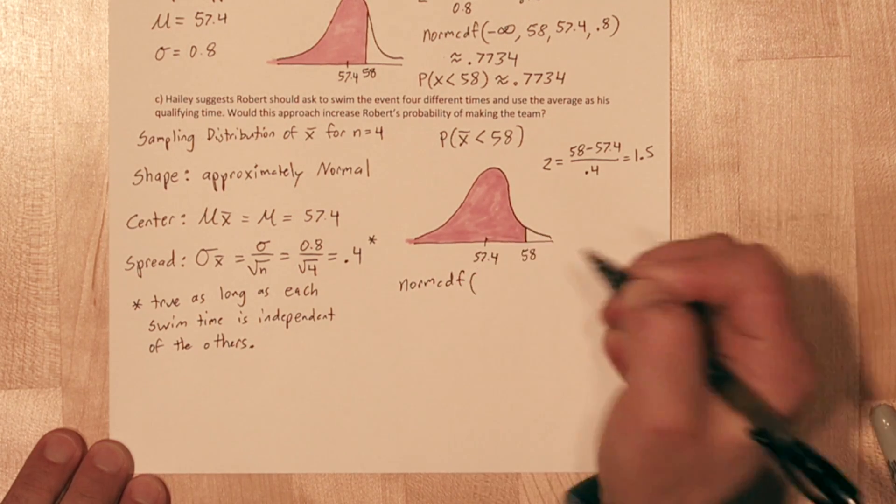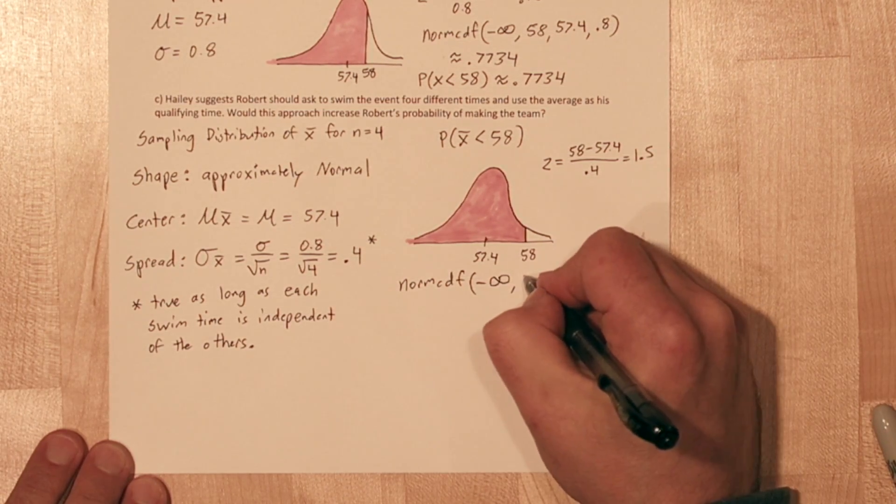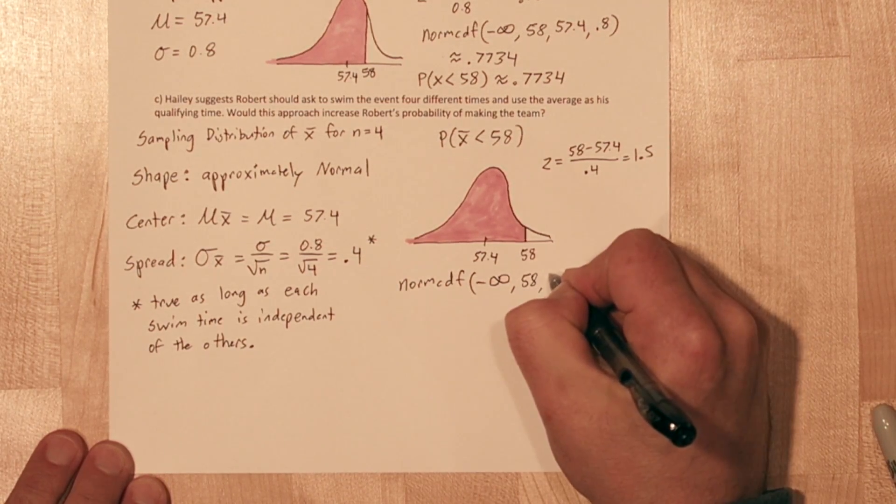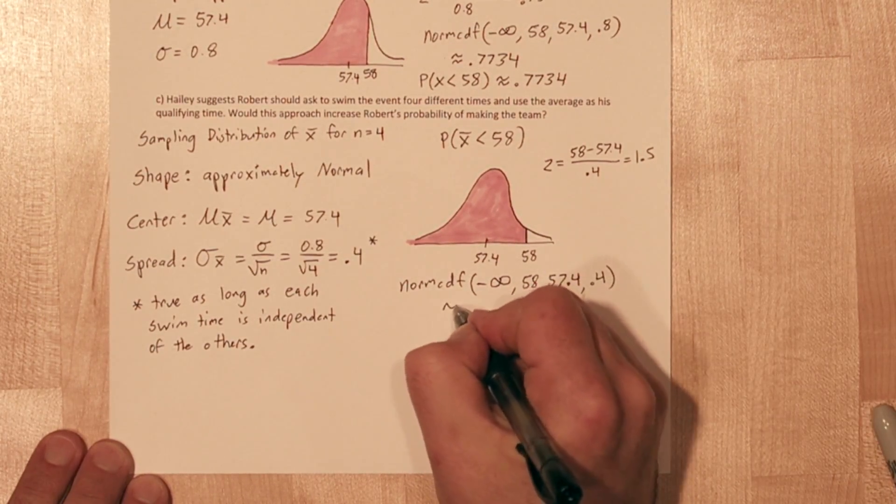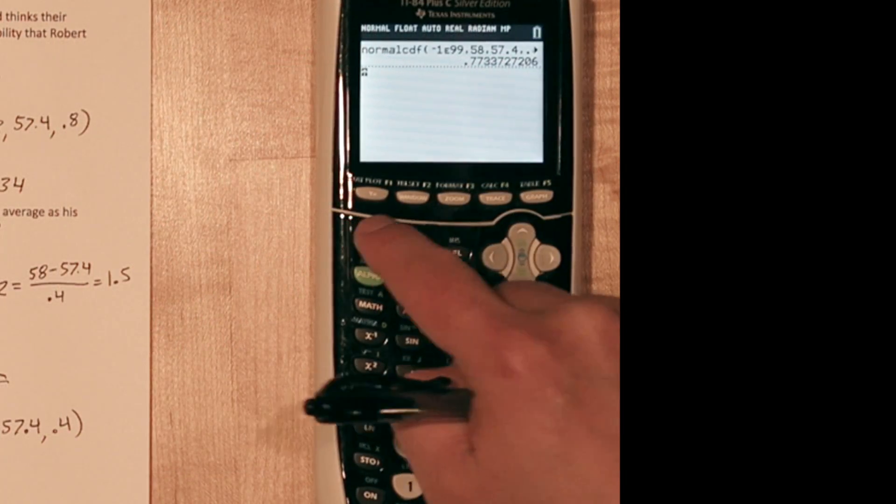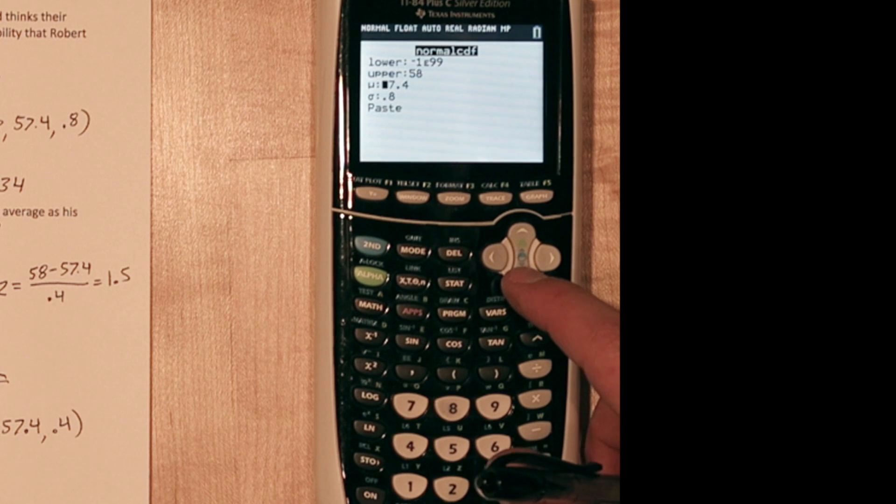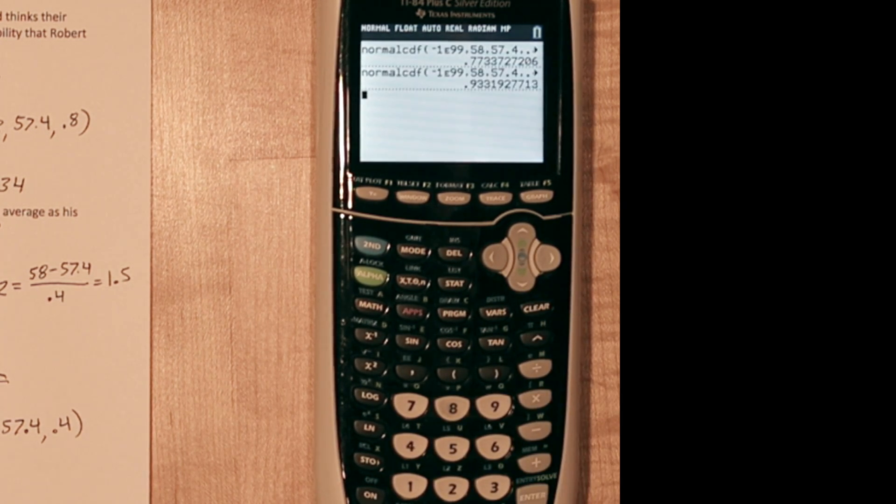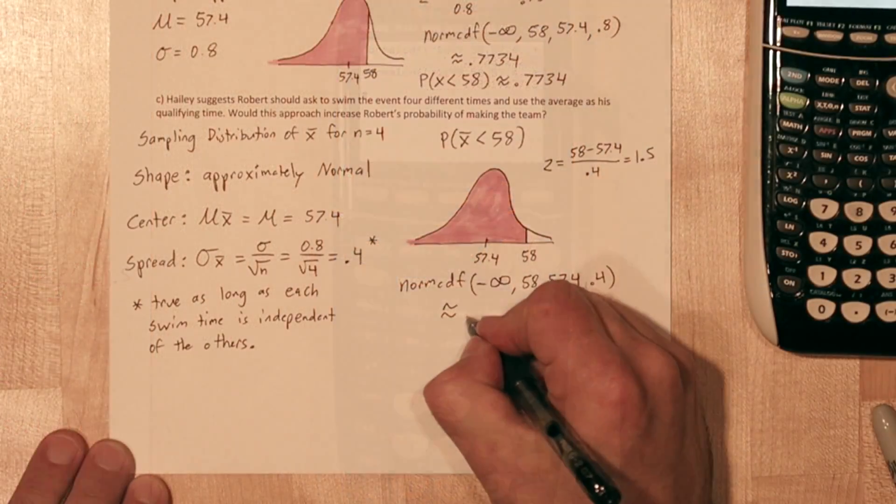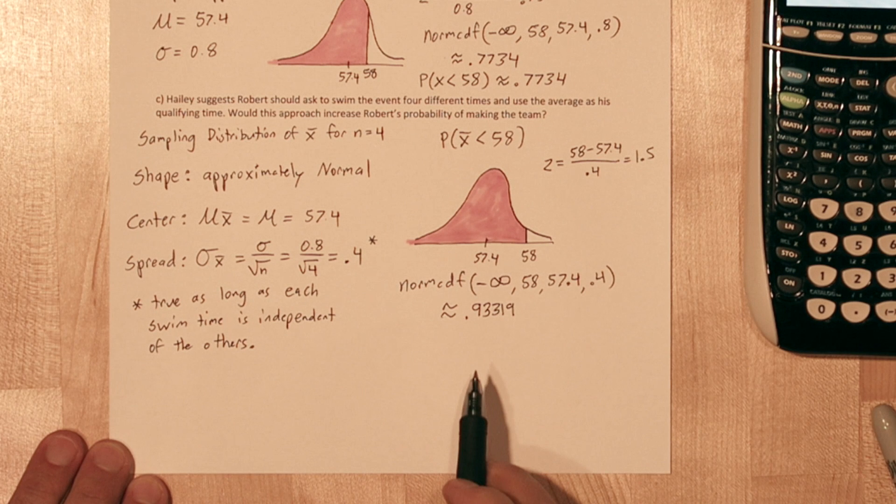So let's use normcdf again. Our lower limit is negative infinity, our upper limit is 58, our mean is 57.4, and now our standard deviation is 0.4. Let's type that in. Now everything that we had before is still there, so all we really need to change is the standard deviation. So there's our new probability, 0.93319. This is substantially higher, so it did improve Robert's chances of making the team.